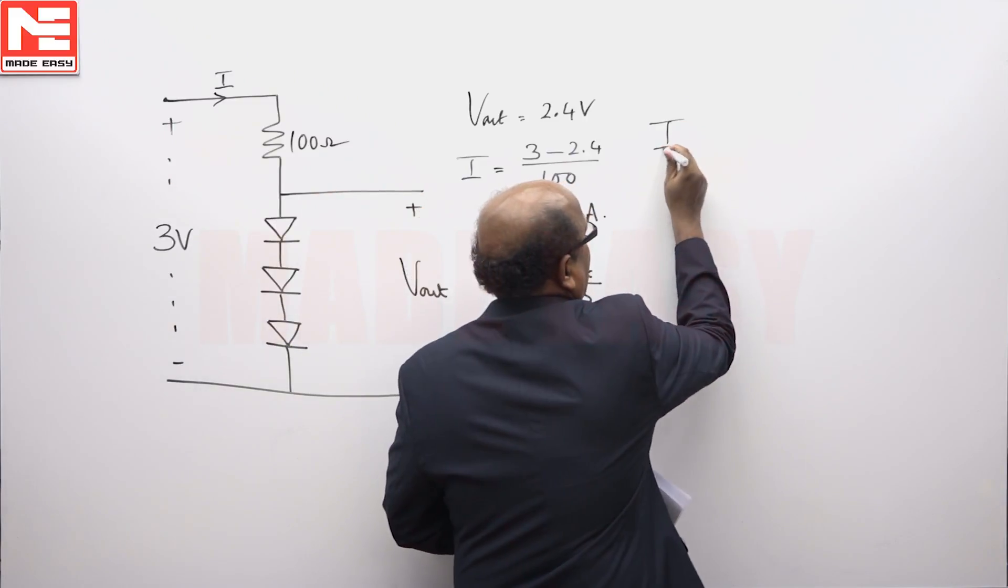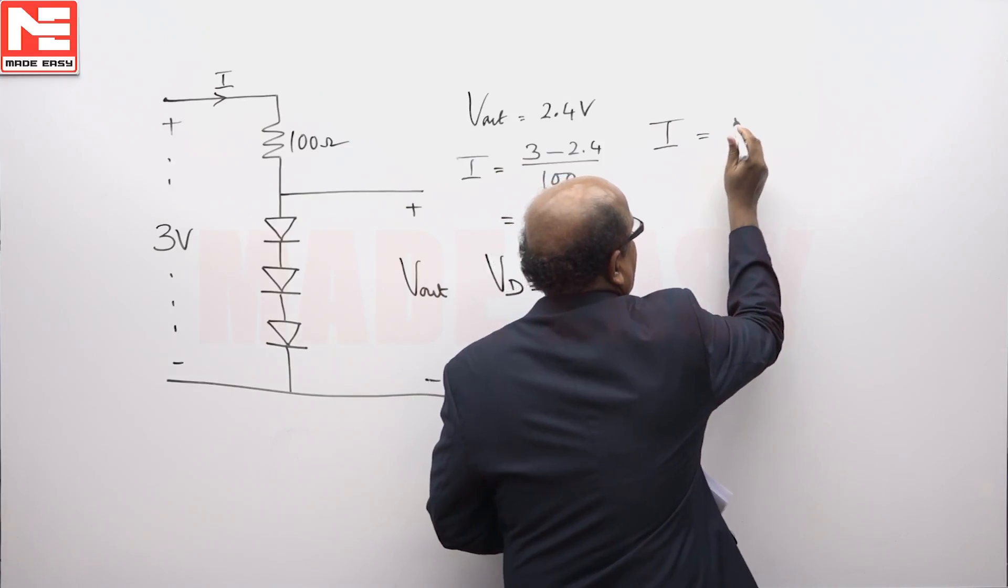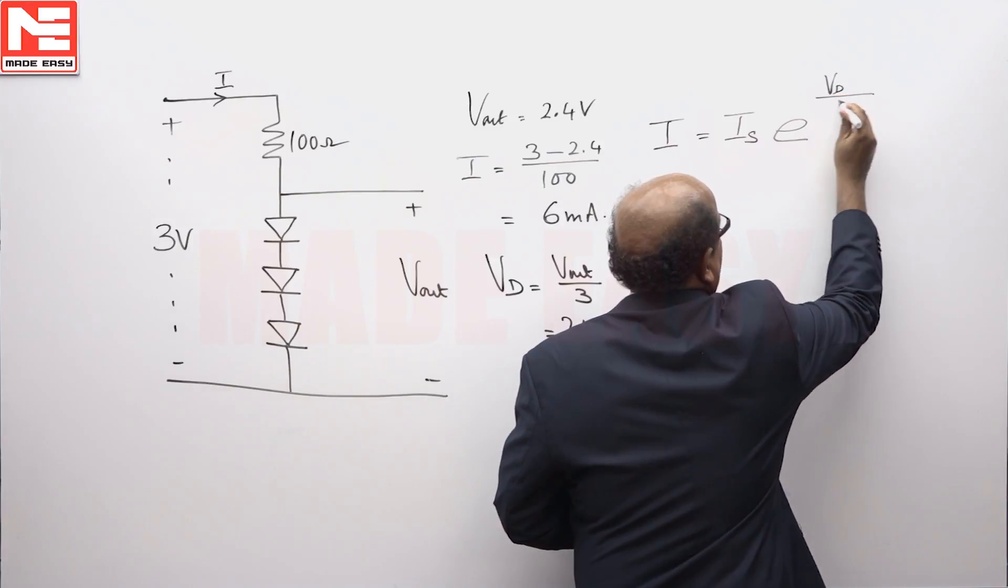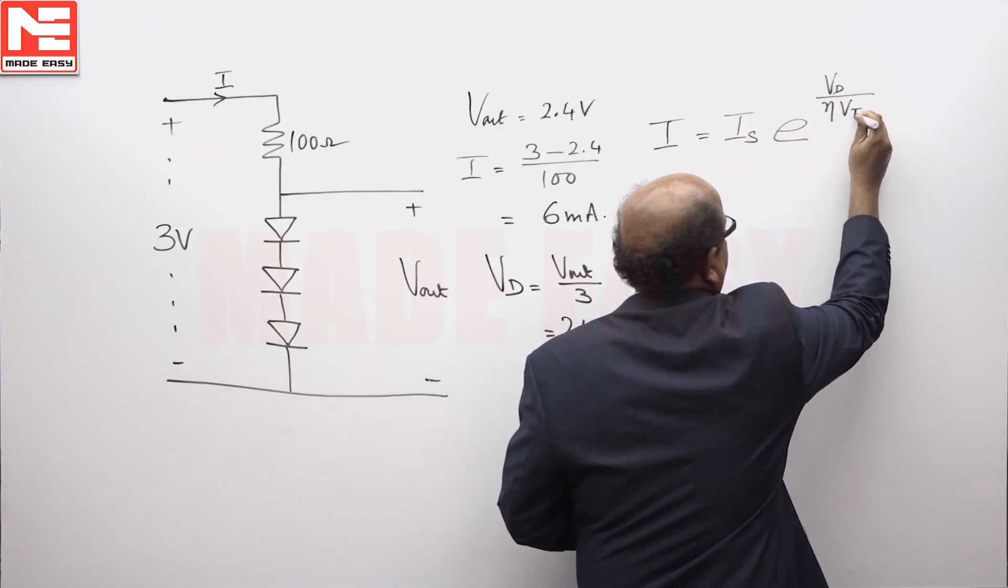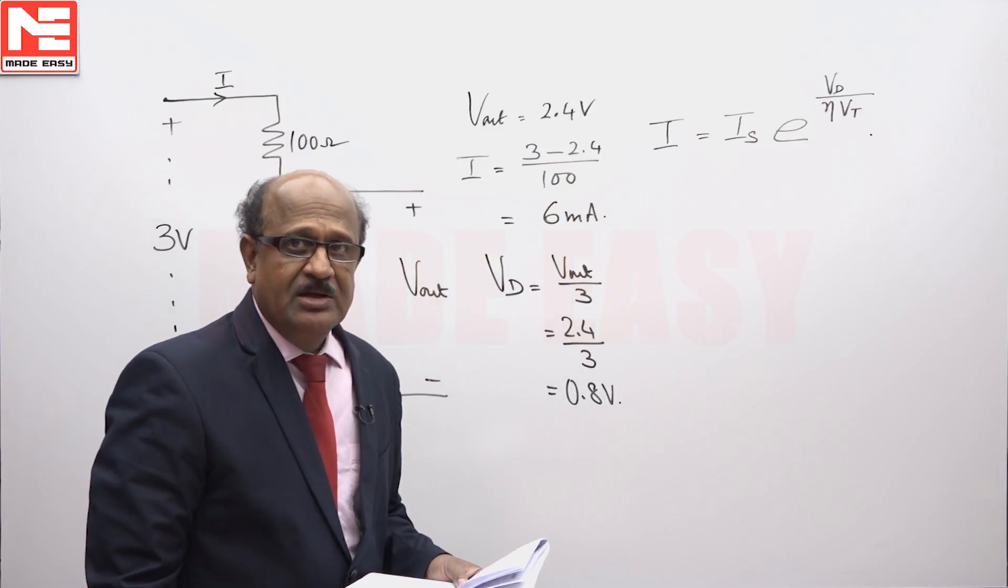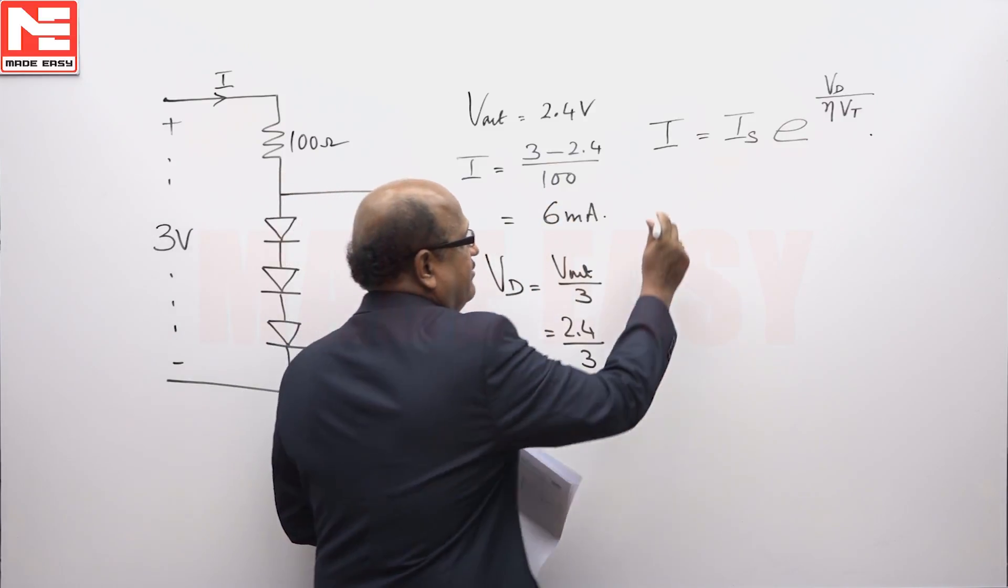The equation for forward current, that is I, will be equal to I_s times e to the power of V_d divided by eta V_t. By default we can consider eta is equal to 1.